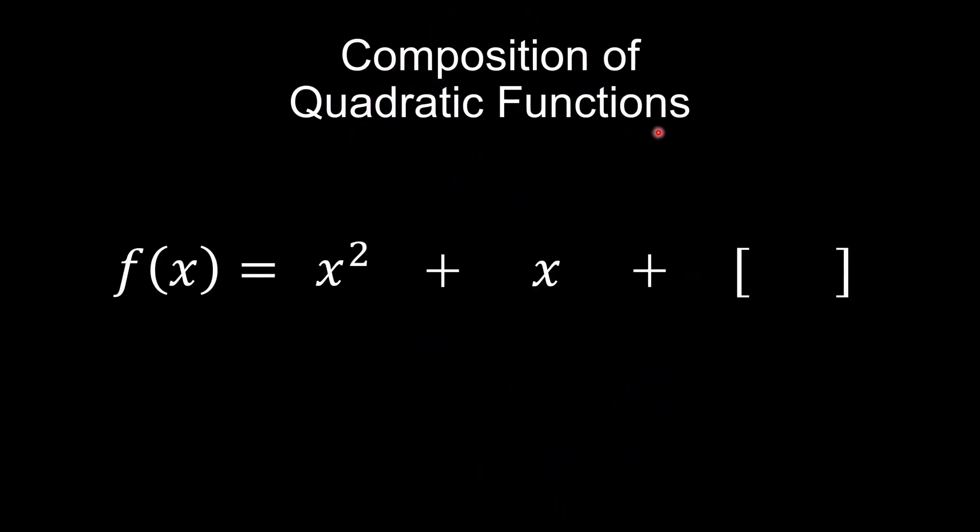So let us see what is the composition of a quadratic function. It's just a polynomial with a degree of 2, meaning that the power of the variable is going to be 2.